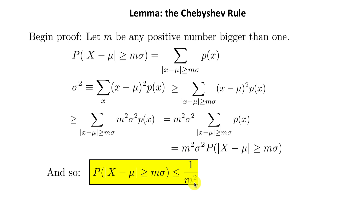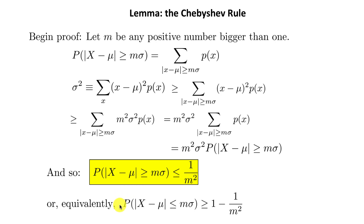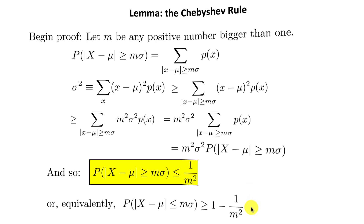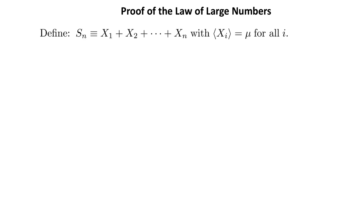We can write Chebyshev's rule in a slightly different way: since all probabilities sum to 1, the probability that |x minus μ| is less than or equal to m·σ is greater than or equal to 1 minus 1/m². Both forms are equivalent statements of the Chebyshev rule. Now we're in a position to prove the Law of Large Numbers. Define S_n as the sum of x₁ through x_n — independent, identically distributed random variables all with the same mean μ and standard deviation σ.